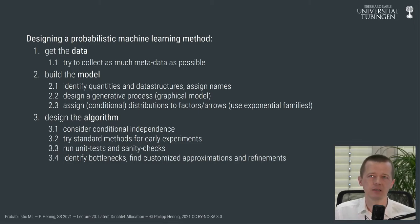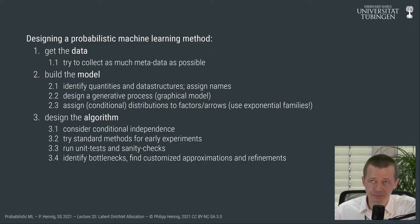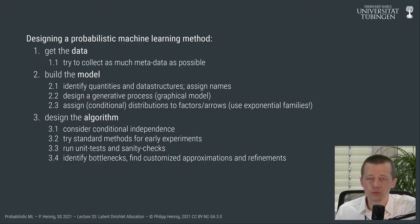As a high-level structure, I proposed a three-step process. You first collect data — last week we decided to use data collecting the words of State of the Union addresses of American presidents over roughly a quarter of a millennium. Once you have the data, you build a generative model: a joint probability distribution over the data and latent variables. The third step is designing an algorithm to solve the computational task of Bayesian inference. Today we step back into the second phase — building the model — and then move to the third phase.